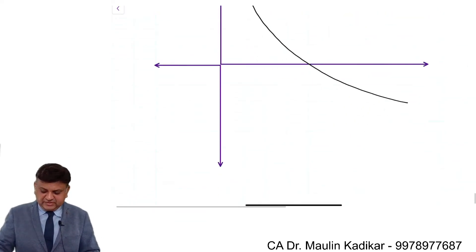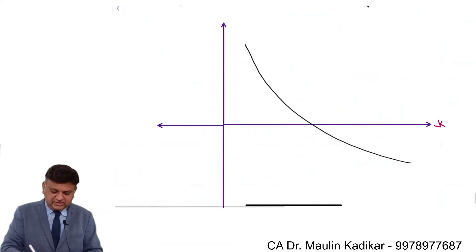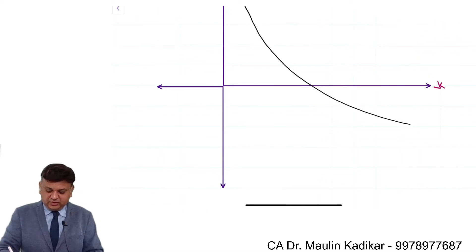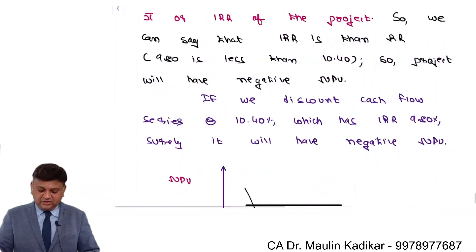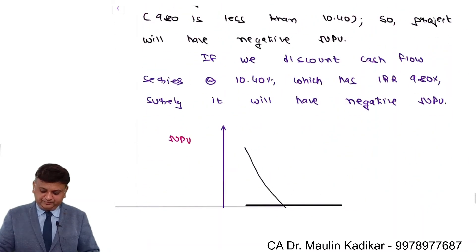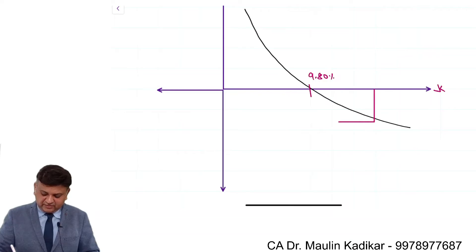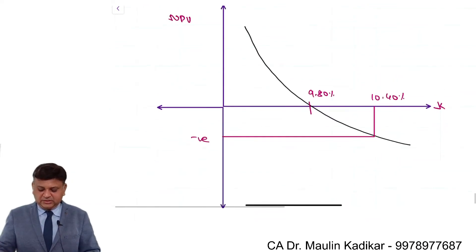Basically the diagram looks like this: on the X-axis take the cost of capital and on the Y-axis take the NPV. The IRR falls at 9.8% in our example. When you discount the cash flow series at 10.4%, which is greater than the IRR of 9.8%, it will have a negative NPV.